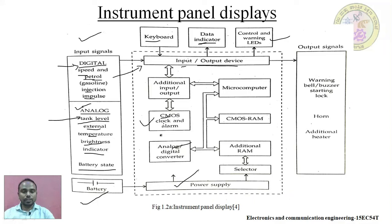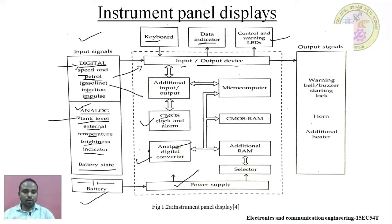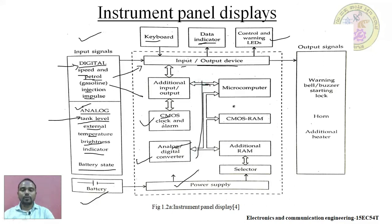The CMOS battery helps the CMOS clock continuously update the time even when the computer is in an off or standby state. The same concept is used in the instrument panel display. The alarming condition connection is also used along with the CMOS clock. The ADC (analog to digital converter) is used if signals are in analog form — it cannot be used directly, so ADC converts the signal through sampling, quantization, and encoding.